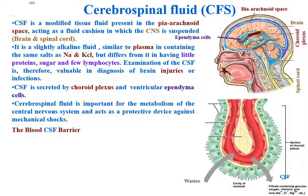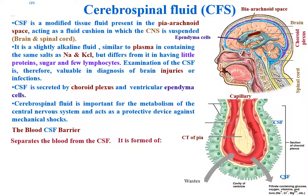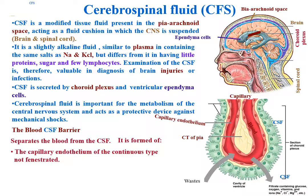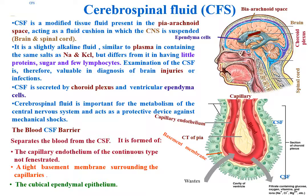The blood-CSF barrier separates the blood present in the blood capillaries of the brain from the cerebrospinal fluid. It is formed of the capillary endothelium of the continuous type without fenestration, a tight basement membrane surrounding the capillaries, and the cuboidal ependymal epithelium.